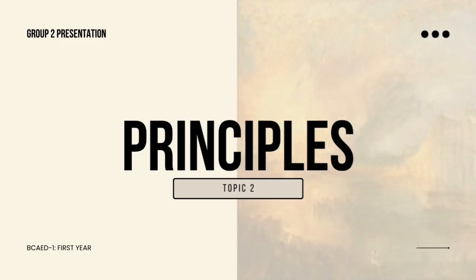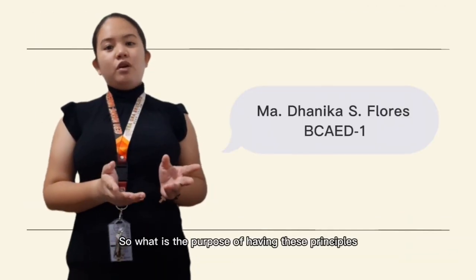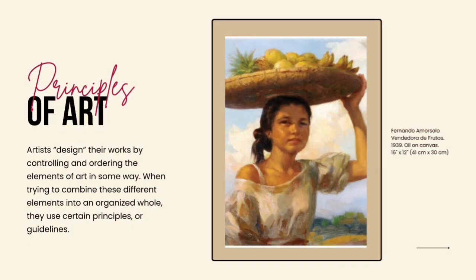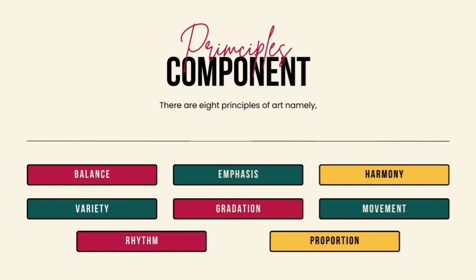Now let's proceed to the principles of art. What is the purpose of having these principles in our art piece? Artists design their works by controlling and ordering the elements of art. When trying to combine these different elements into an organized whole, they use certain principles or guidelines. There are eight principles of art: balance, emphasis, harmony, variety, gradation, movement, rhythm, and proportion.